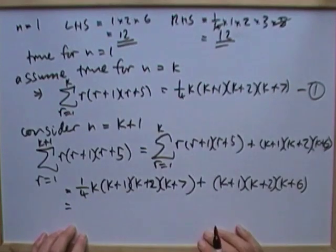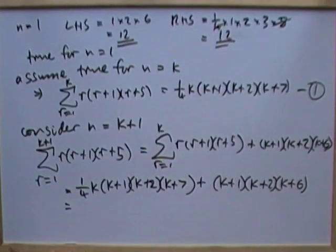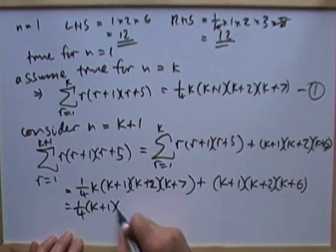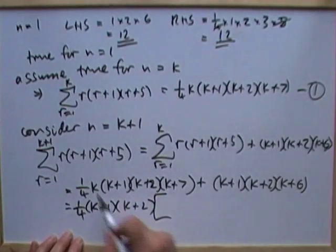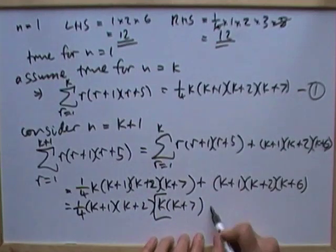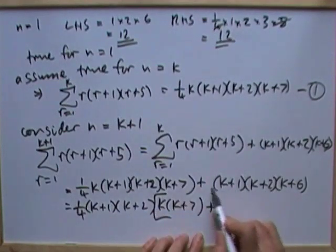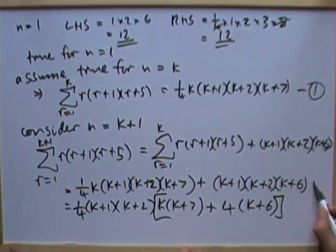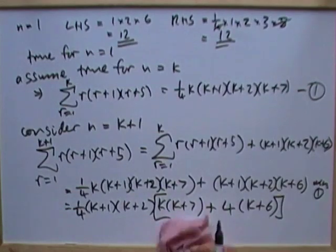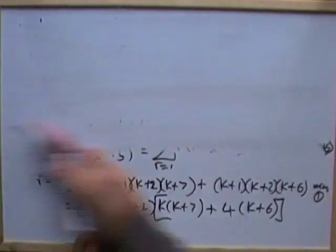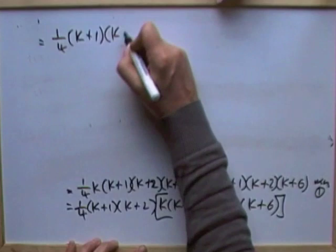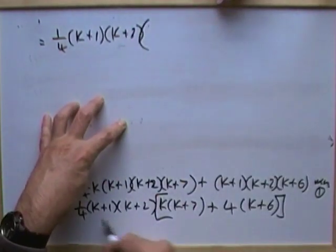Now the task is to gather this all up to get the formula with k+1s. First step: get rid of that quarter — take out the quarter. There are common factors: take out (k+1) and take out (k+2), as both terms have them, and then see what's left. I've taken out everything from the first term apart from k and (k+7). From the second term I've got (k+1) and (k+2) out, but divided by a quarter, so I make that term four times bigger, and I've still got (k+6) remaining.